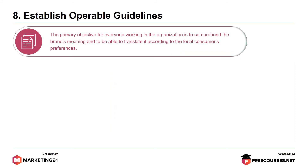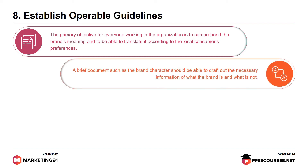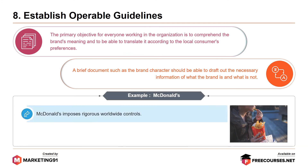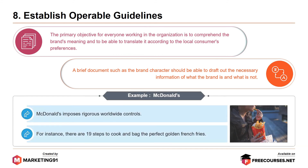Moving on to the eighth commandment: establish operable guidelines. The primary objective for everyone in the organization is to comprehend the brand's meaning and translate it according to local consumer preferences. A brief document such as a brand charter should draft out what the brand is and what it is not. For example, McDonald's imposes rigorous worldwide controls — there are 19 steps to cook and bag the perfect golden french fries.